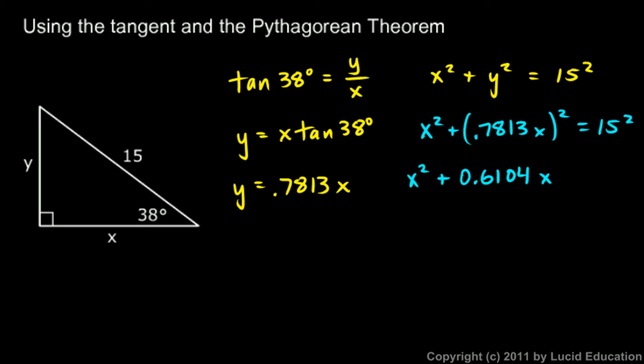And this can be combined. This x squared right here, think of that as a 1 x squared. So 1 x squared plus 0.6104 x squared is 1.6104 x squared, and that equals 15 squared on the right.